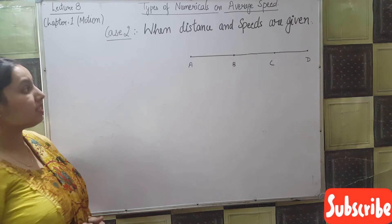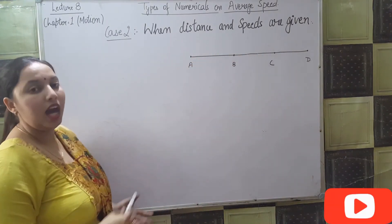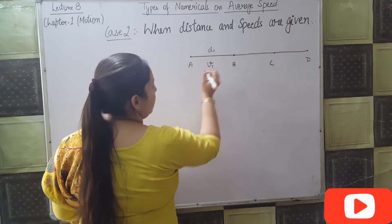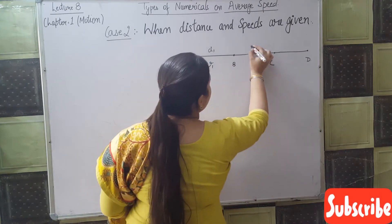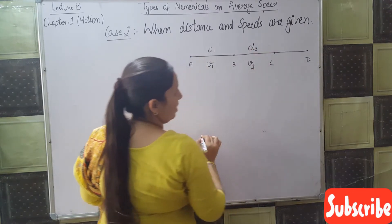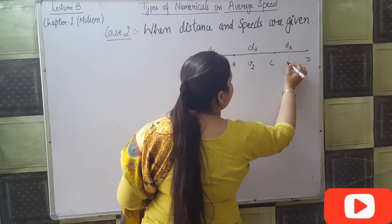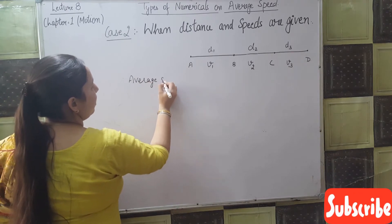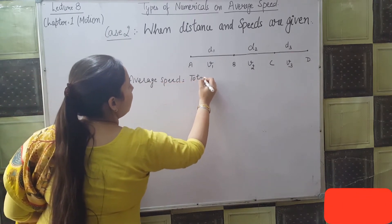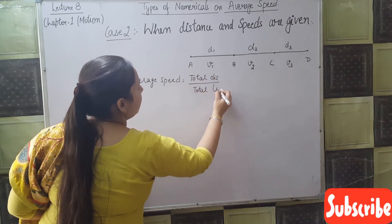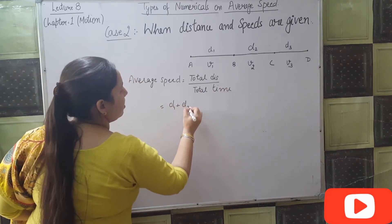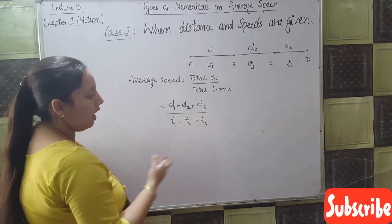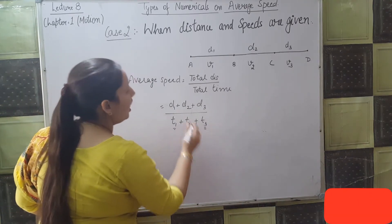Next case is when distance and speeds are given. Then how do we find the average speed? Distance from A to B is d1 and speed v1 is given from A to B. From B to C, distance d2 and speed v2 are given. From C to D, distance d3 and speed v3 are given. The formula for average speed is total distance divided by total time: d1 plus d2 plus d3 divided by t1 plus t2 plus t3. But here t1, t2, t3 are not given, so we have to find them in terms of speed.